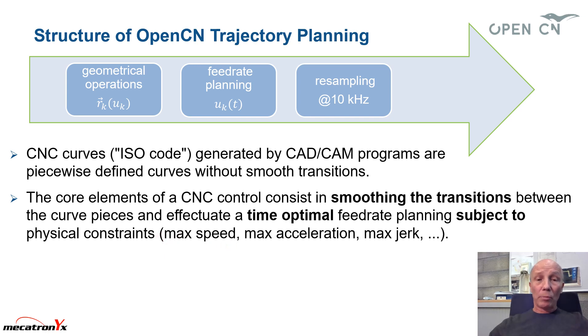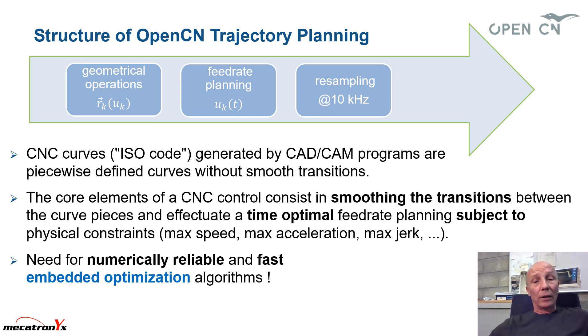Typically, maximum speed per piece, maximum acceleration per axis, maximum jerk per axis. A complex CAD CAM program might have 100,000 pieces of curves. And of course, you need to have very reliable, robust, numerically reliable algorithms and sufficiently fast.